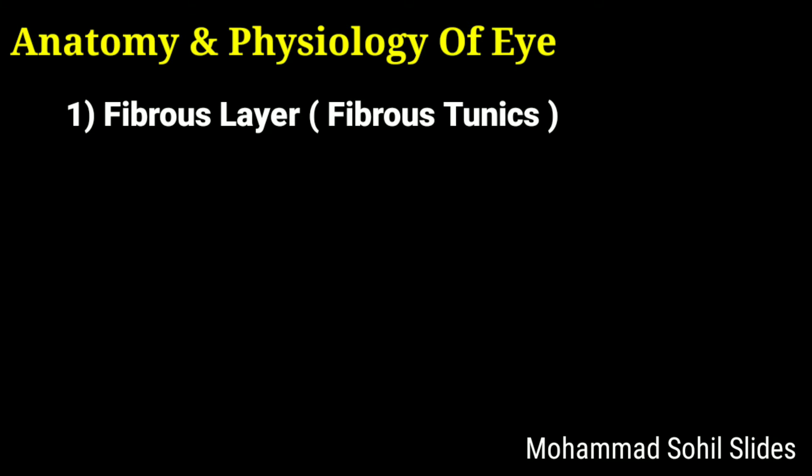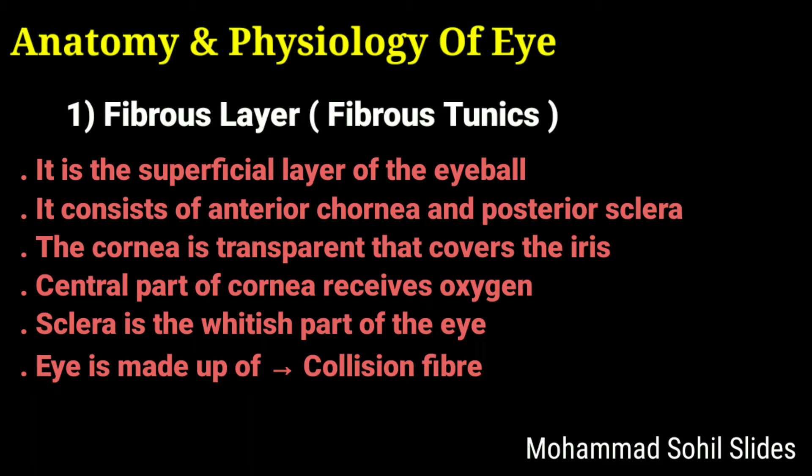The first layer is the fibrous layer, also called fibrous tunics. It is the superficial layer of the eye or eyeball. It consists of the anterior cornea and posterior sclera. The cornea is transparent and covers the iris, helping to focus light onto the retina. The central part of the cornea receives oxygen. The sclera is the whitish part of the eye, mostly made up of collagen fiber and fibroblasts.